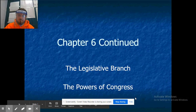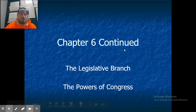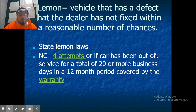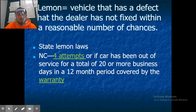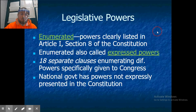Chapter six continued, still talking about the legislative branch, specifically about the powers that Congress has. A lemon law is when a vehicle has a defect and the dealer has not dealt with it within a reasonable number of chances — for North Carolina it's four attempts, or if the car has been out of service for a total of 20 or more business days in a 12-month period.